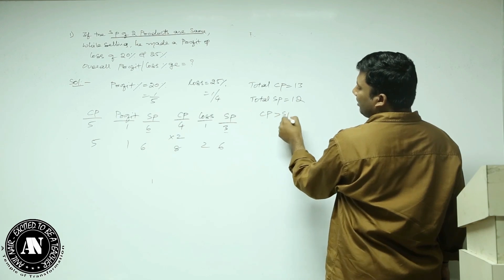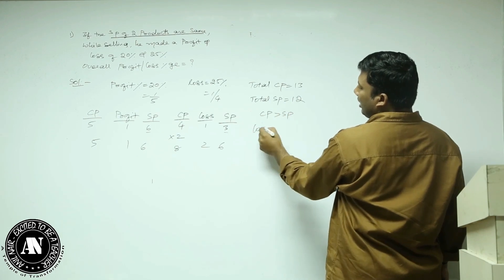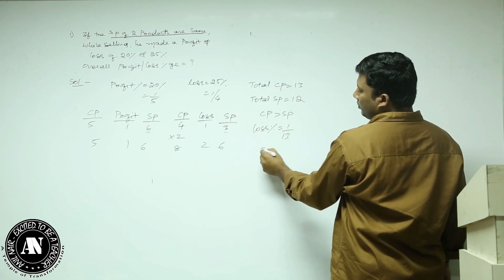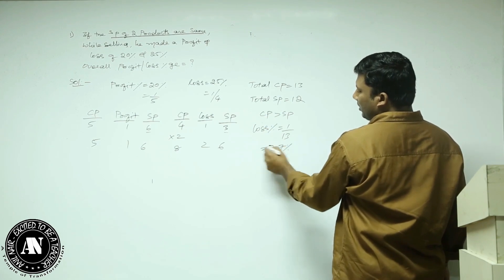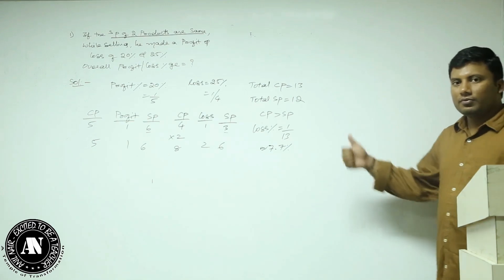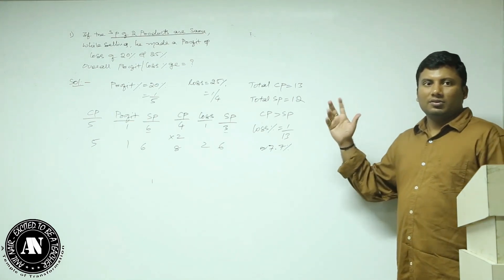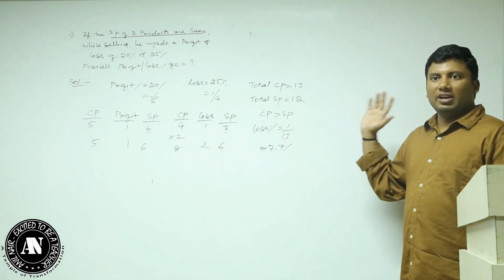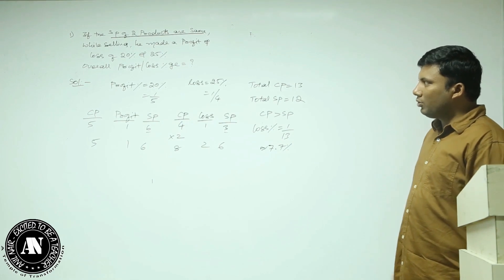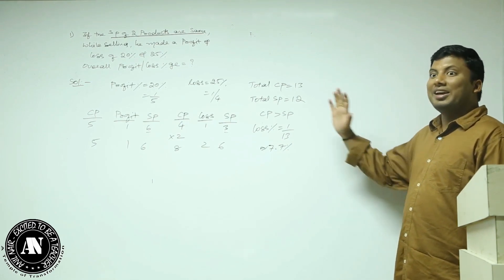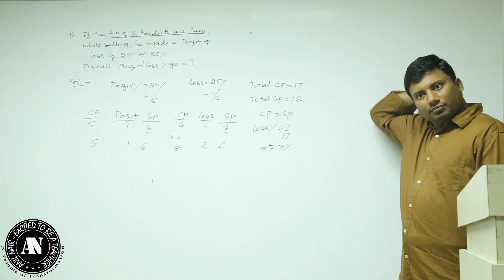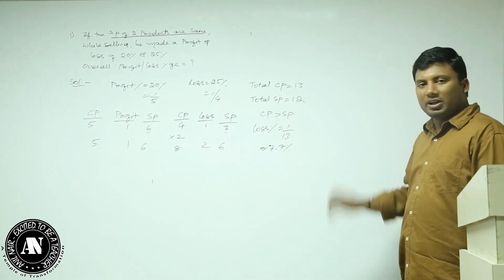Cost price is greater than selling price, so again loss. Loss is 1 by 13, approximately 7.7%. Not only for two products — for n products you can use the same logic.